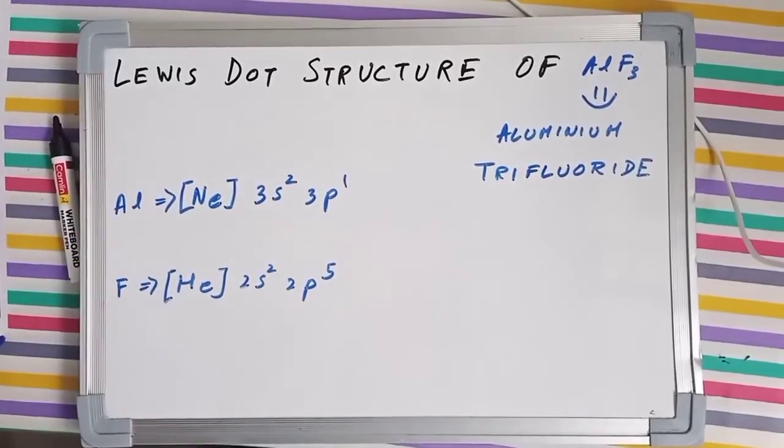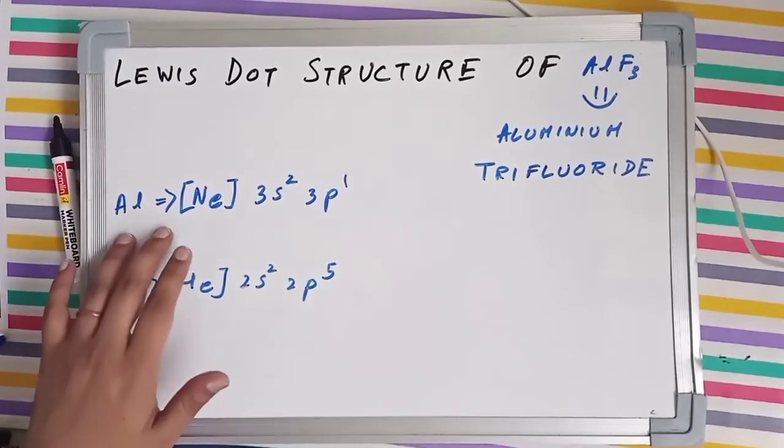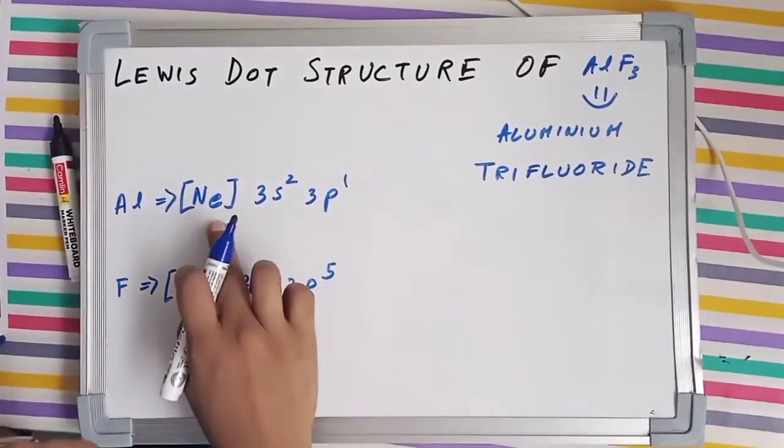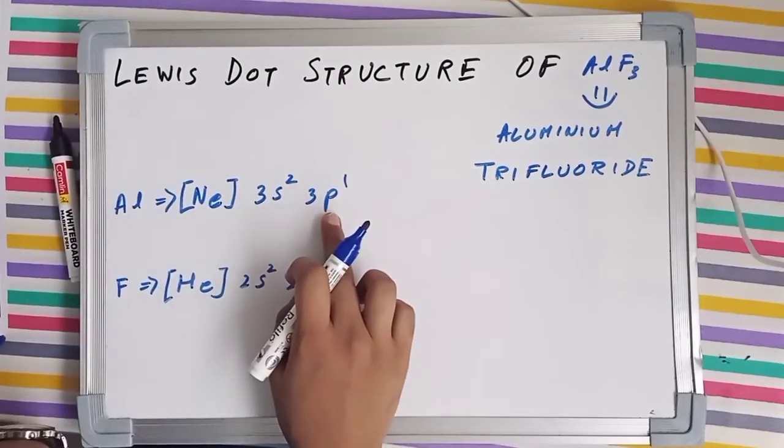Namaste everyone. We will be drawing the Lewis dot structure of AlF3 which is aluminum trifluoride. Now the electronic configuration of aluminum is the inert configuration of neon and then 3s2 and 3p1.